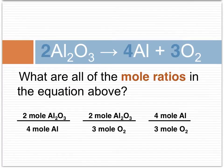In our aluminum oxide decomposition example, here are some of the mole ratios that can be extracted from that equation. Since the coefficient with aluminum oxide is two, and the coefficient with aluminum is four, a mole ratio would be two moles of aluminum oxide per four moles of aluminum. The inverse is also true.